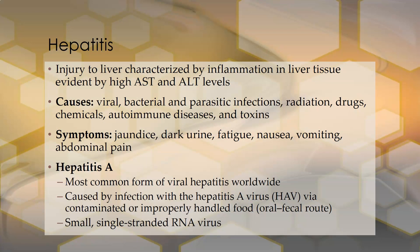Hepatitis is an injury to the liver characterized by inflammation in the liver tissues, as evidenced by high AST and ALT levels. The causes can be varied — definitely viral, and when we think hepatitis a lot of times our minds go straight to viral hepatitis, but it can also be bacterial, parasitic infections, radiation, drugs, chemicals, autoimmune diseases, and toxins. All of these things can cause hepatitis.